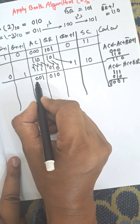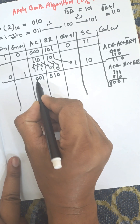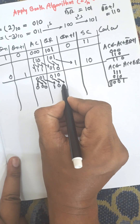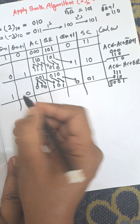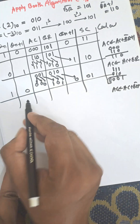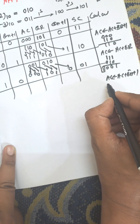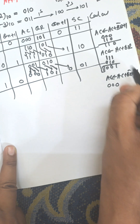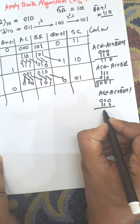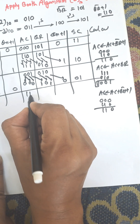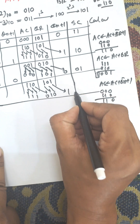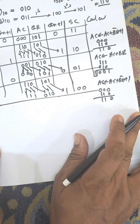Now we perform the shift operation. The result is 0 0 0 0 0 0 followed by 1 1 1 0. QR remains the same. After the shift, the counter is decremented to zero and we stop the algorithm.